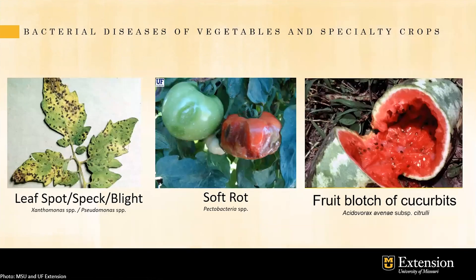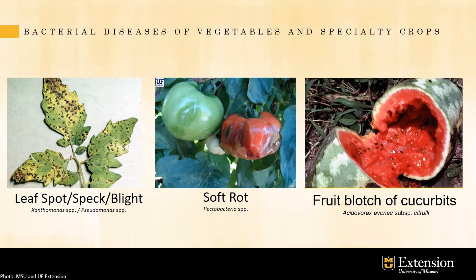There are several types of bacterial disease that can affect vegetables, especially cereal crops. Leaf spots, leaf speck, and leaf blight are caused by Xanthomonas species, which can cause leaf spots all over the leaves and premature defoliation. These are more common in spring when conditions are hot, warm, or very humid. Two other bacterial diseases are associated with rot symptoms: soft rot for tomato and fruit blotch of cucurbits. Fruit blotch is normally seed-transmitted, so you must use disease-free or certified seeds when planting watermelons.